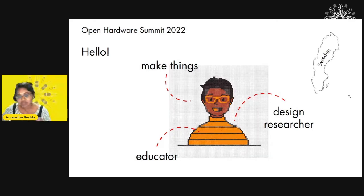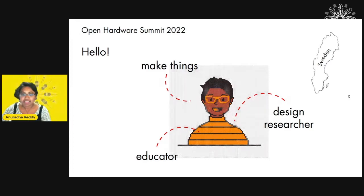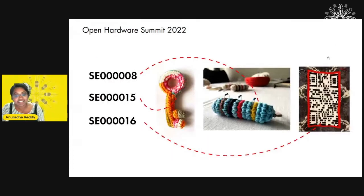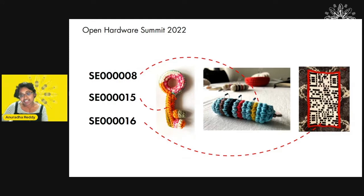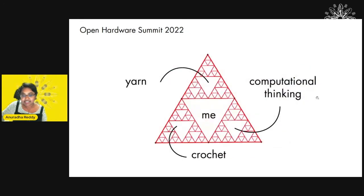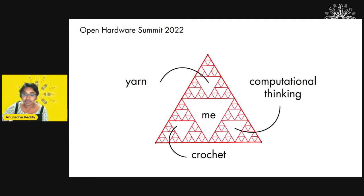Recently these worlds have been colliding and I've come to start making things that are naughty, but also naughty, like playful. So the things that I make look like these. In this presentation I'll talk about three designs that I've made and have been able to certify as open source hardware. What brings these three designs together is this little Sierpinski triangle of mine: yarn as my main material, crochet as my medium, and computational thinking as my approach.